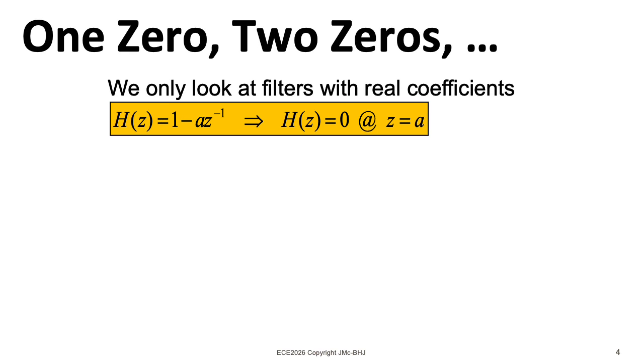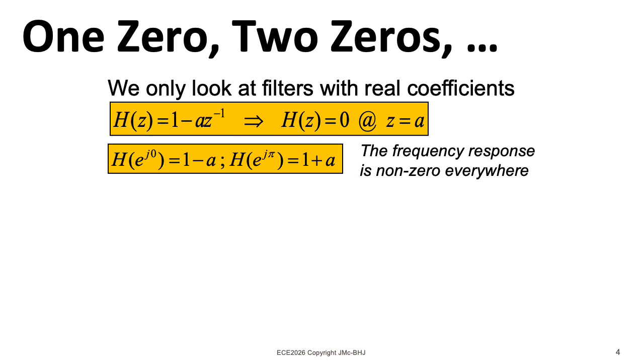Let's first think about a simple first-order filter. In this particular case, we have a zero at a. If you want to place things on the unit circle, and you want your coefficients to be real, well then you've only got two places that you could put your zero.